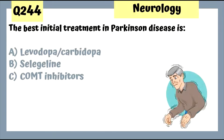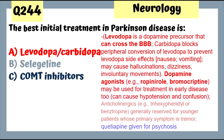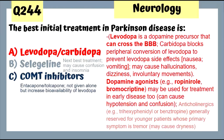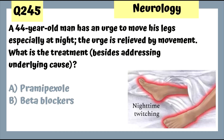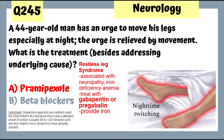Question 244: Best initial treatment in Parkinson's disease is Levodopa-Carbidopa. A dopamine agonist such as ropinirole or bromocriptine may be used in early disease but can cause hypotension and confusion. Question 245: A 44-year-old man has an urge to move his legs especially at night — Restless Leg Syndrome. Treatment is pramipexole; however gabapentin and pregabalin are replacing pramipexole as first-line treatment. Provide iron if there is associated iron deficiency.